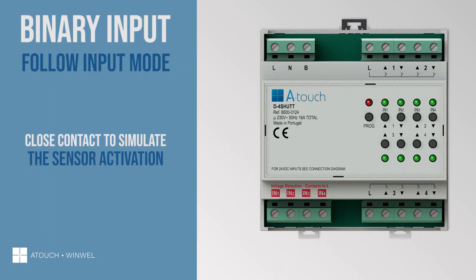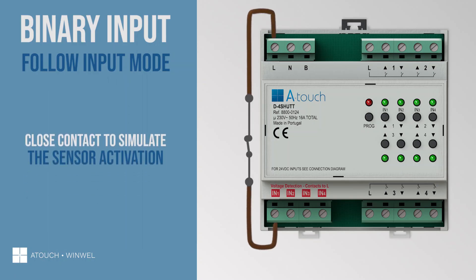Now let's test the settings. Close contact between the L connector and the binary input to simulate the sensor activation. Notice that this action will close the awning and keep it closed until you open the contact. With the contact still closed, try to open the awning by touch panel or by the touch app. Notice that nothing happens, because we set the option with the lock condition.